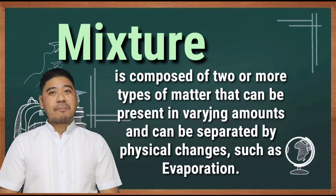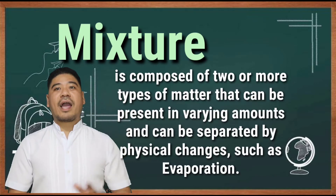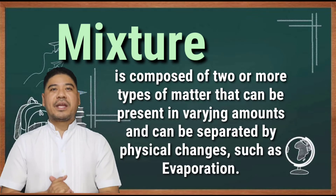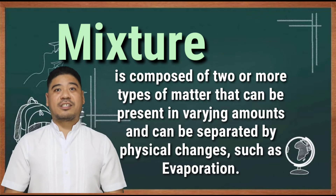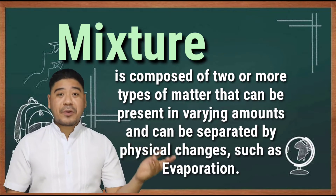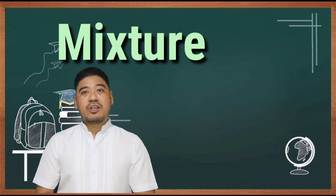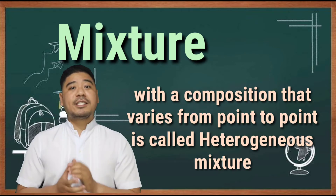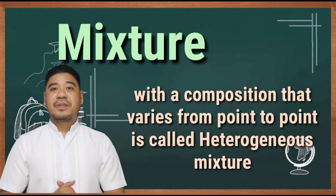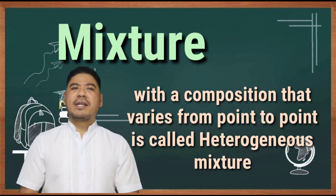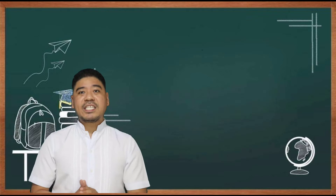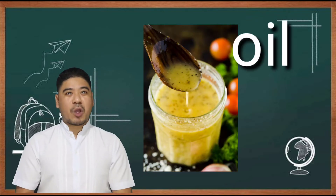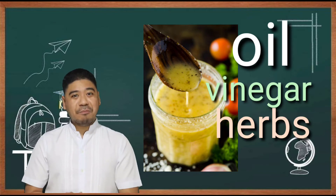A mixture is composed of two or more types of matter that can be present in varying amounts and can be separated by physical changes, such as evaporation. A mixture with a composition that varies from point to point is called a heterogeneous mixture. A very good example of a heterogeneous mixture is an Italian dressing — it may include oil, vinegar, and herbs.